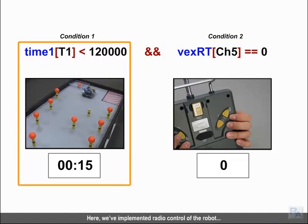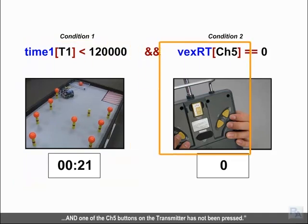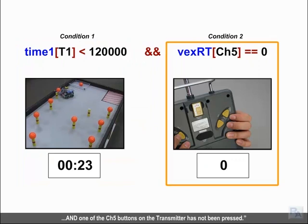Here, we've implemented radio control of the robot while the value in timer T1 is less than 2 minutes, and one of the channel 5 buttons on the transmitter has not been pressed.